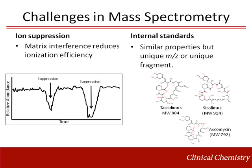Internal standards are used in many mass spectrometry assays as a means to address ion suppression and imprecision in the analysis. Correctly chosen internal standards will behave similarly to the analytes being measured, but importantly must have a unique mass-to-charge ratio, or for tandem mass spectrometry, a unique fragment. For example, an LC-MS method for tacrolimus and sirolimus might use ascomycin as an internal standard. The same amount of ascomycin is added to each sample, and the resultant peak area of the analyte is divided by the peak area of the internal standard to provide a ratio used for further calculation.